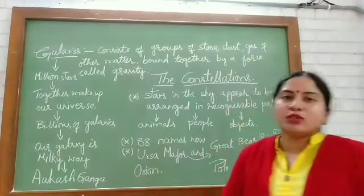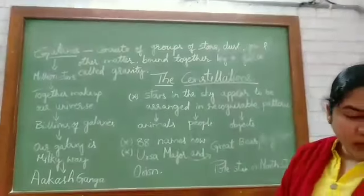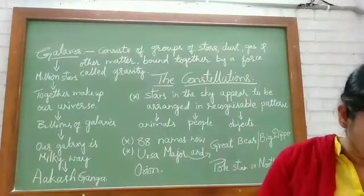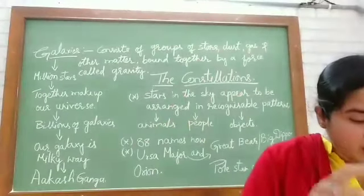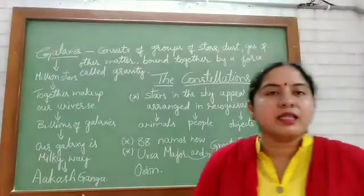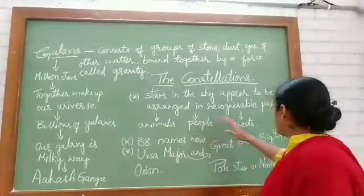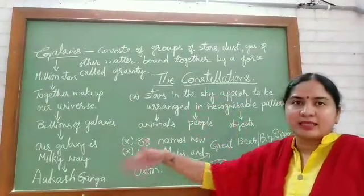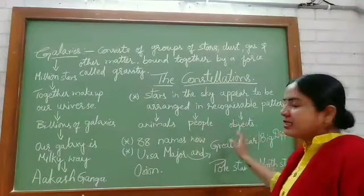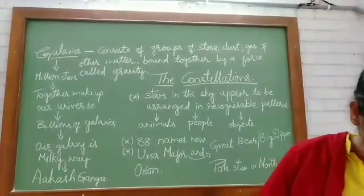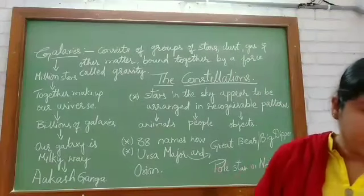Now let's come to the constellation. Children, if you turn to page number 2, our next subheading is constellation. Some of the stars in the sky appear to be arranged in recognizable patterns. Some patterns are in the form of animals, some in the form of people, and some in the form of objects. These patterns that stars appear to make in the sky are called constellations.